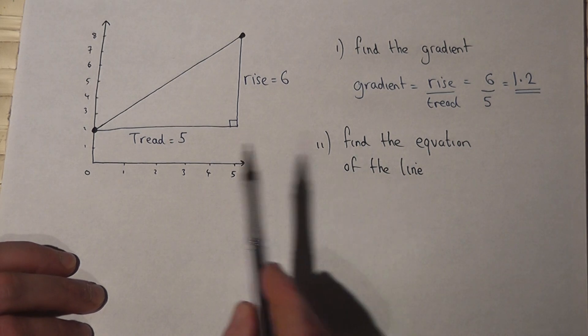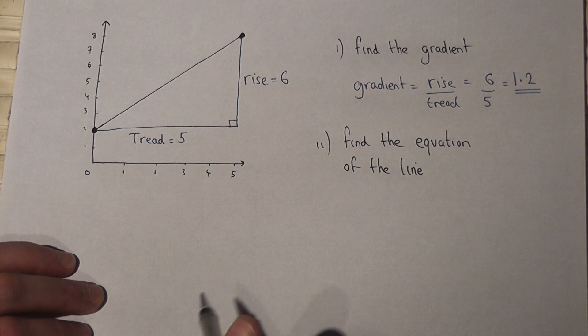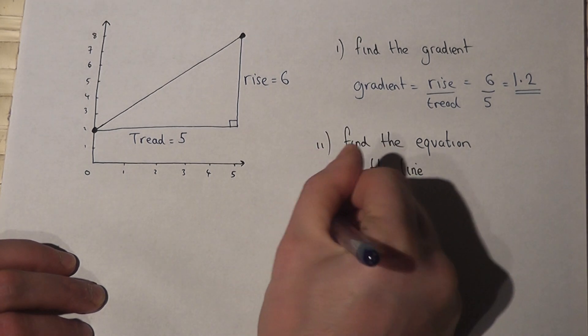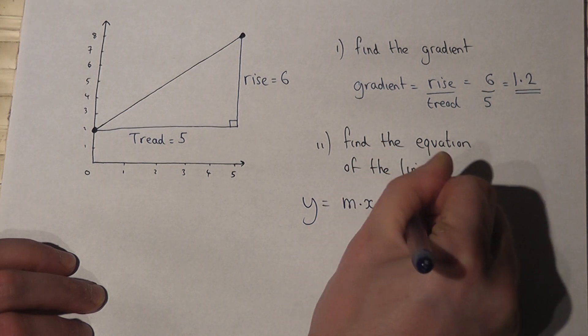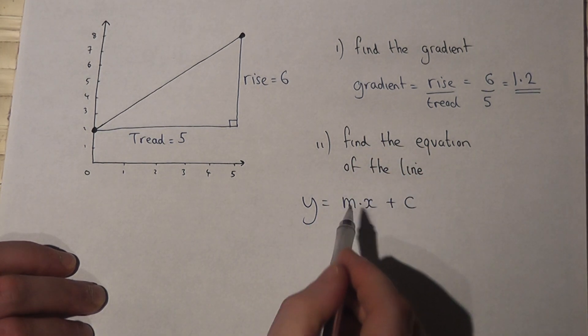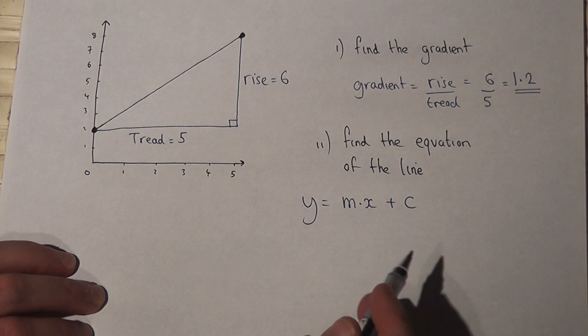Now then, a straight line has also got an equation, and the equation is always of the form y equals m times x plus c. Now m is always the gradient.